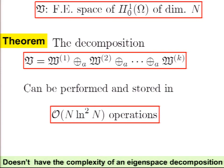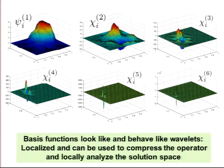If you have a finite element space H¹₀ of omega of dimension n — typically the one you get with hat functions — this eigenspace-like decomposition can be performed and stored in complexity n log² n. Furthermore, if you look at the underlying basis functions spanning these subspaces, they look like and behave like wavelets: they are localized, not diffused like Fourier modes, and they can be used to compress the operator and locally analyze the solution space.